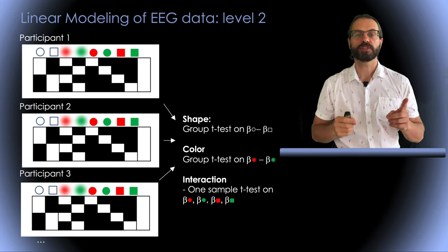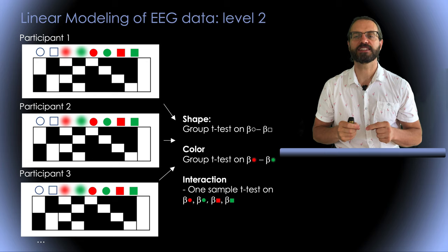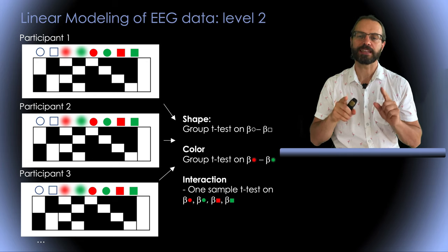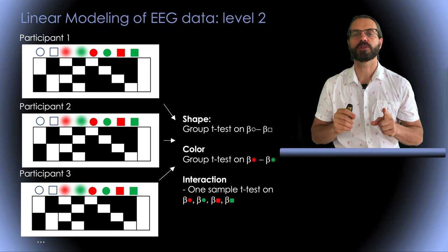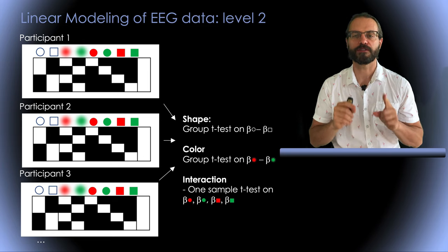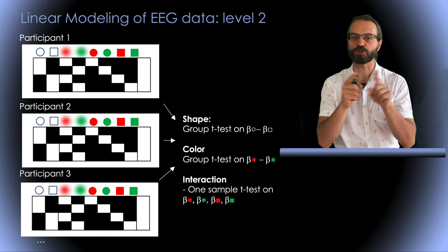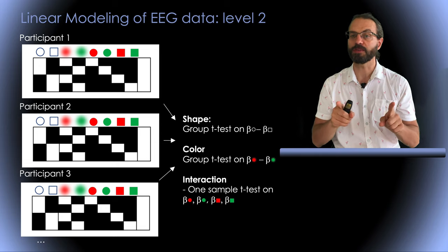I mentioned previously that you could also use a full factorial design model at the first level. In this case, you have already extracted interactions at the first level, so you cannot recompute them at the second level. If you have a full factorial design model at the first level, you could use a two-sample paired t-test between beta for square and beta for disk to assess the effect of shape.